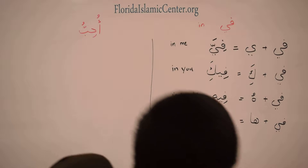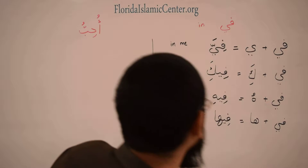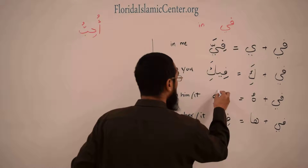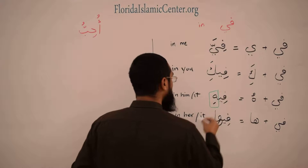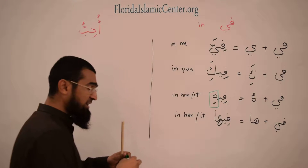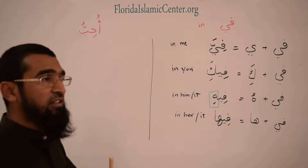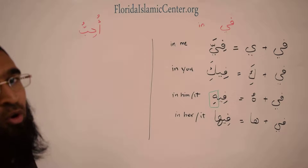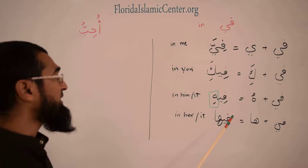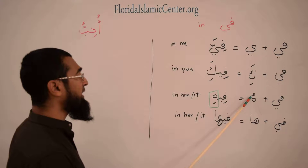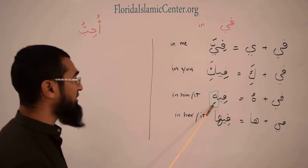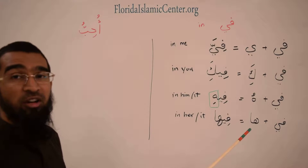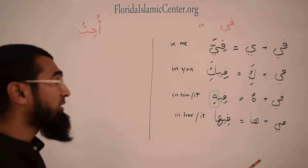Now observe that فيه is going to take a kasra — فيه. So it's not going to be like عنده or له; it doesn't take a damma anymore, it takes a kasra. فيه — you have to memorize that and know it well.